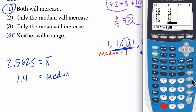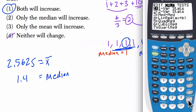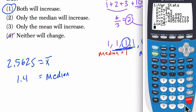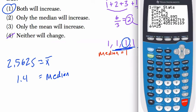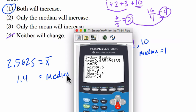And now do the same thing. After I hit enter, stat, calc, one variable stats, only this time I do it on list 2. Hit enter. And you can see that the mean has gone up. Let's compare. 2.5625 to 2.86. And the median has also gone up. The median, sorry, has not changed. So I was wrong. Cool.